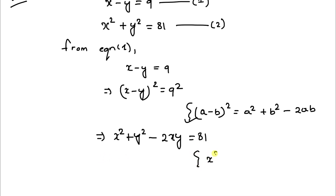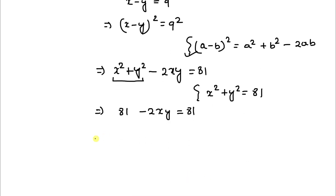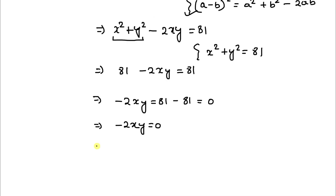From equation 2 we have x squared plus y squared equals 81. Substituting this value: 81 minus 2xy equals 81. Bringing 81 to the right-hand side: minus 2xy equals 81 minus 81, which equals 0. This implies 2xy equals 0, and therefore xy equals 0. Let's take this as equation 3.